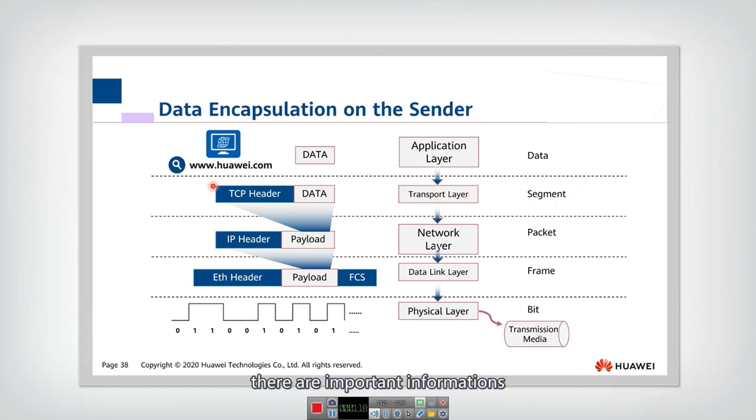In the header, there is important information, for example, the port number, source port number, and destination port number written in this domain. Then the segments are transmitted down to the network layer. The network layer will add another header, which is the IP header. They will add, for example, the IP address in the header.